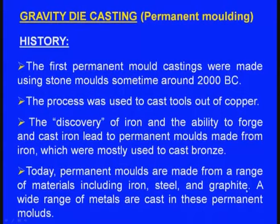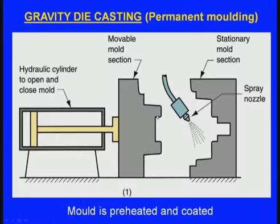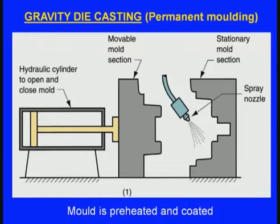A wide range of non-ferrous metals can be cast in these permanent moulds. Now let us learn about the gravity die casting process steps. There are two moulds: one is a stationary mould and the other is a movable mould. Both are metallic moulds with cavities inside. When we close these two, there is a cavity inside that resembles the shape of the casting we want to produce.